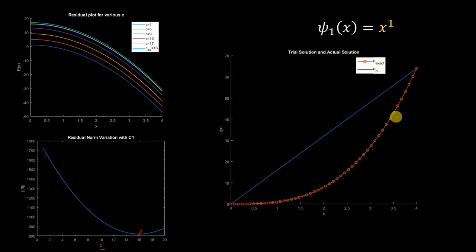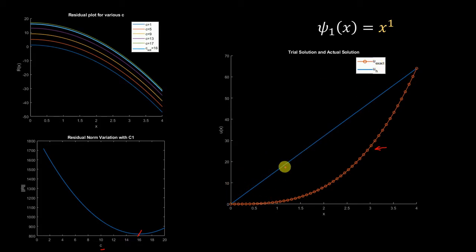Now comparing the exact and trial solutions: this is the exact solution — I should have plotted it with a solid line, but that's fine. This is the trial solution constructed using c = 16, so it is nothing but the line 16x.